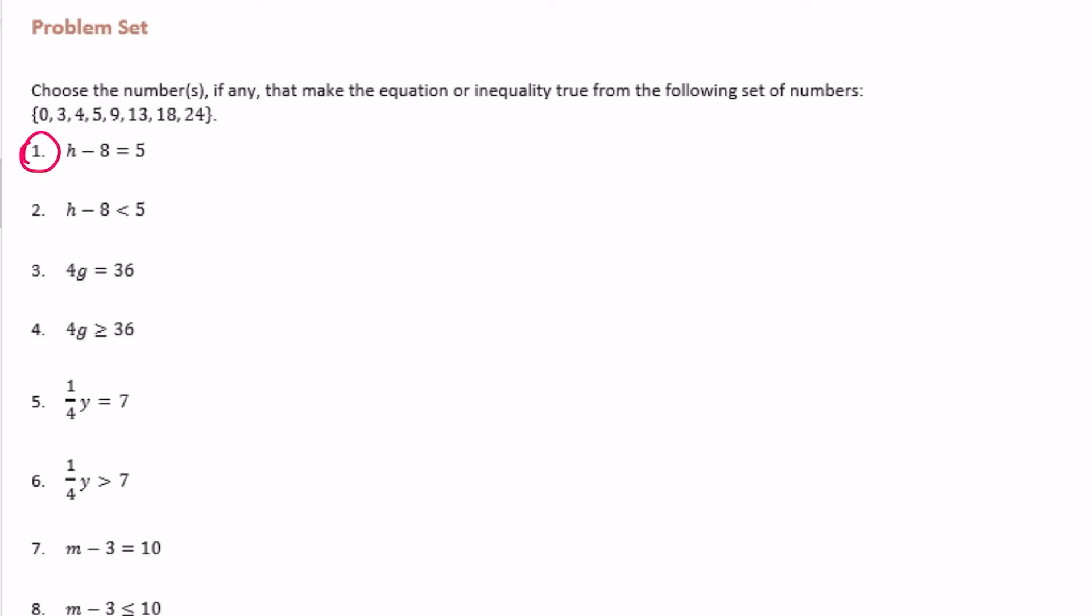Problem 1: h minus 8. To counteract that minus 8 I'm going to do plus 8, which equals 5 plus 8. So h minus 8 plus 8 would be 0, which equals 5 plus 8 is 13. So h must equal 13, which is right here. The only one that makes this true is 13.